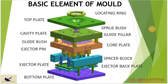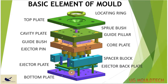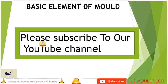Generally, these are the basic parts that we require to manufacture an injection molding part. Firstly, there is a locating plate, top plate, sprue bush, cavity plate, core plate, guide pillar, guide bush, ejector pins, ejector plate, ejector back plate, and bottom plate. These are the basic elements we have to manufacture a mold.